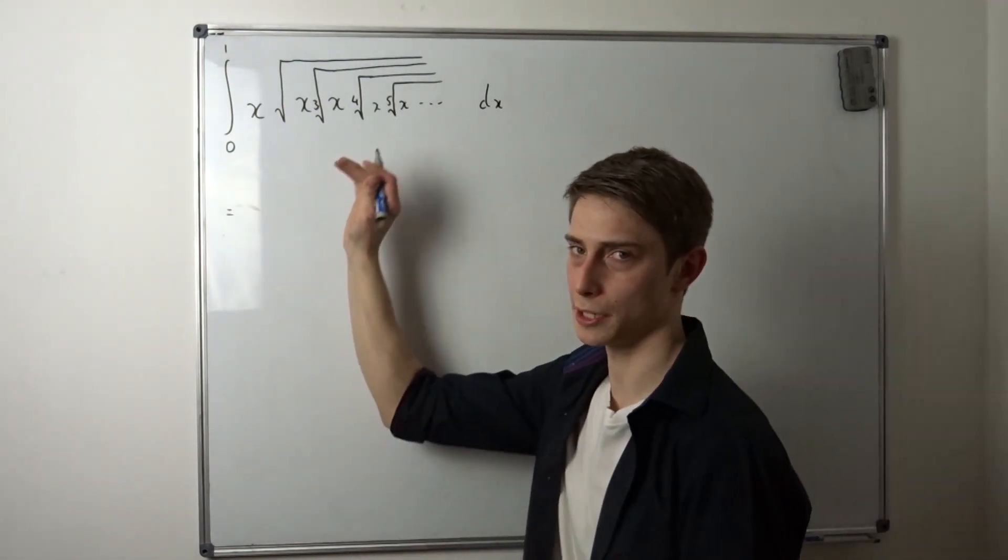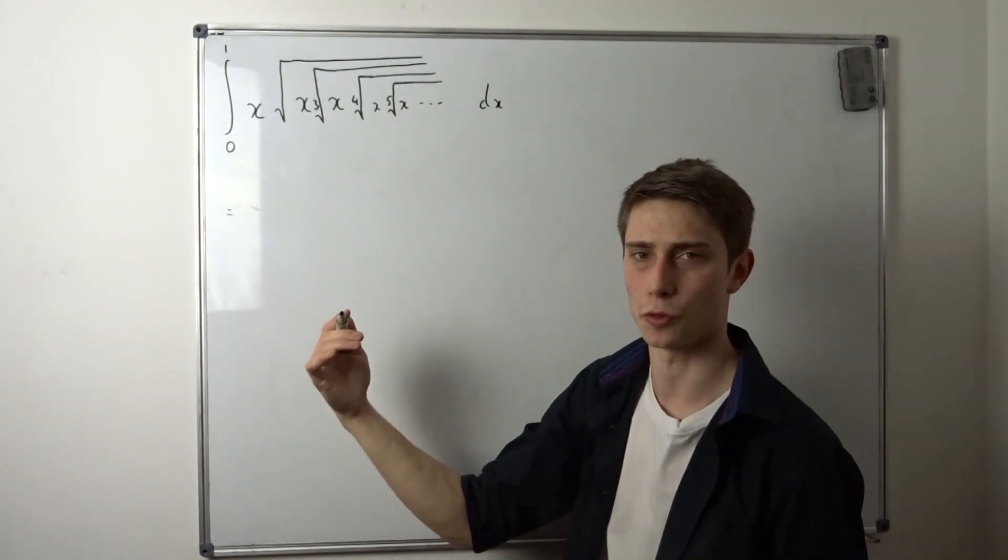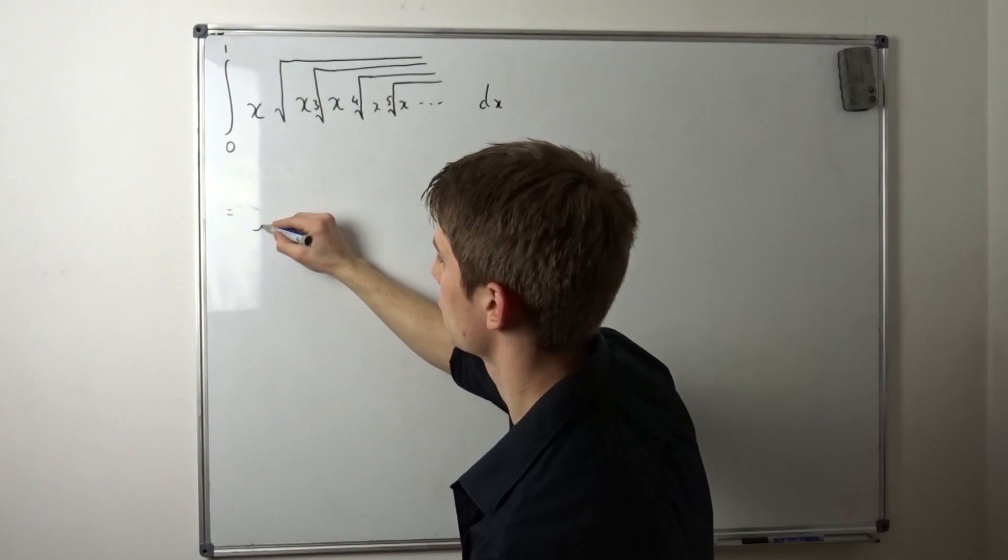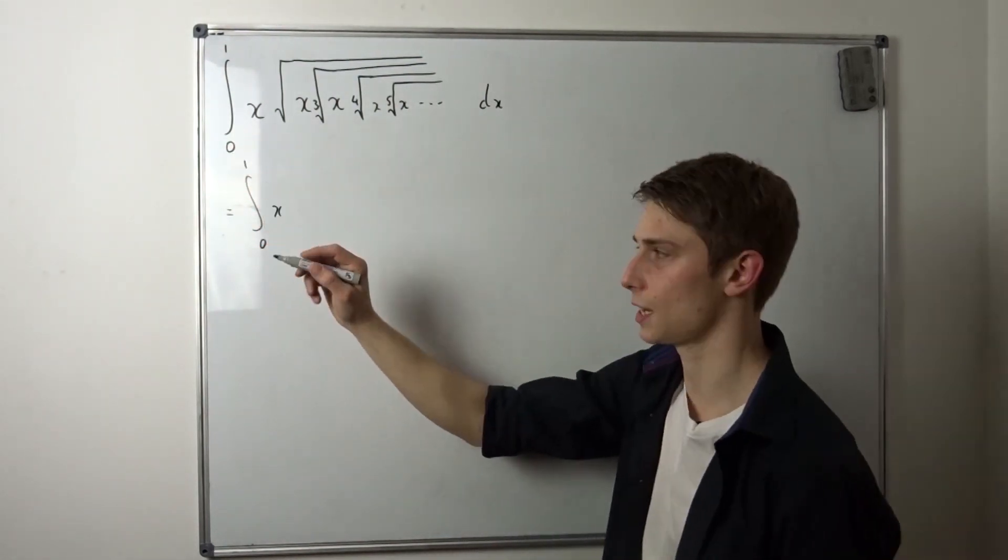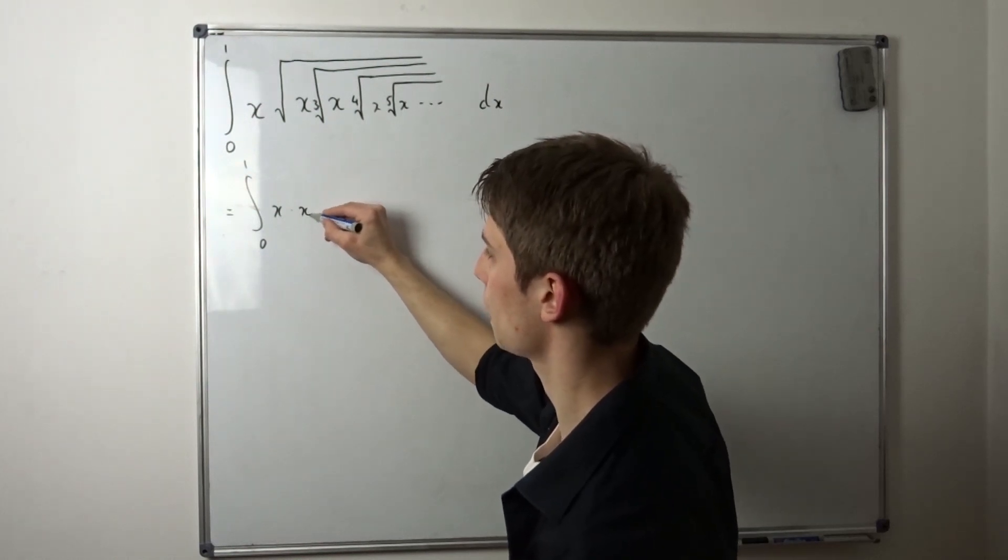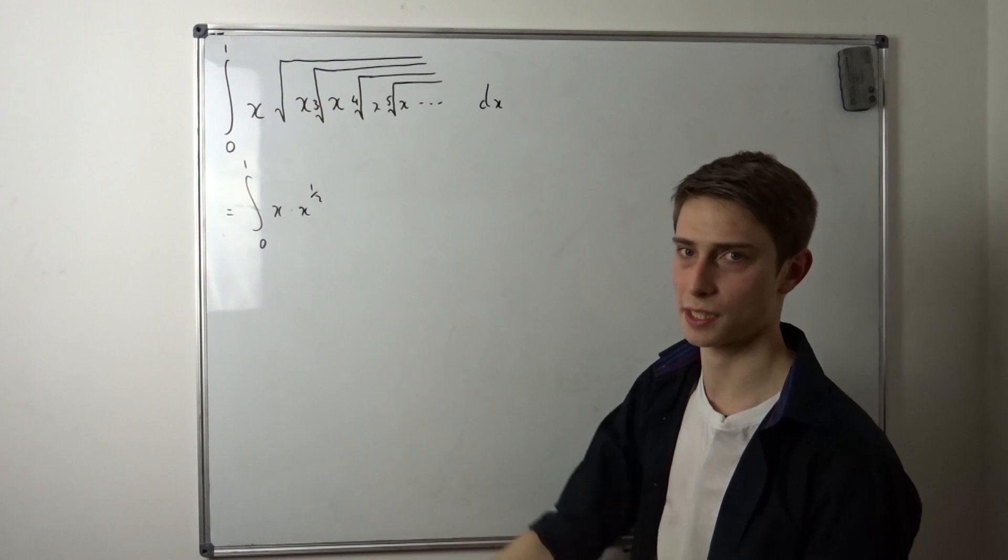So first we'll rewrite this integral, because it looks kind of messy with all those square roots, cube roots, fourth roots, etc. So that's the integral from zero to one of x times x to the one half power. We can distribute this one half power to this x.